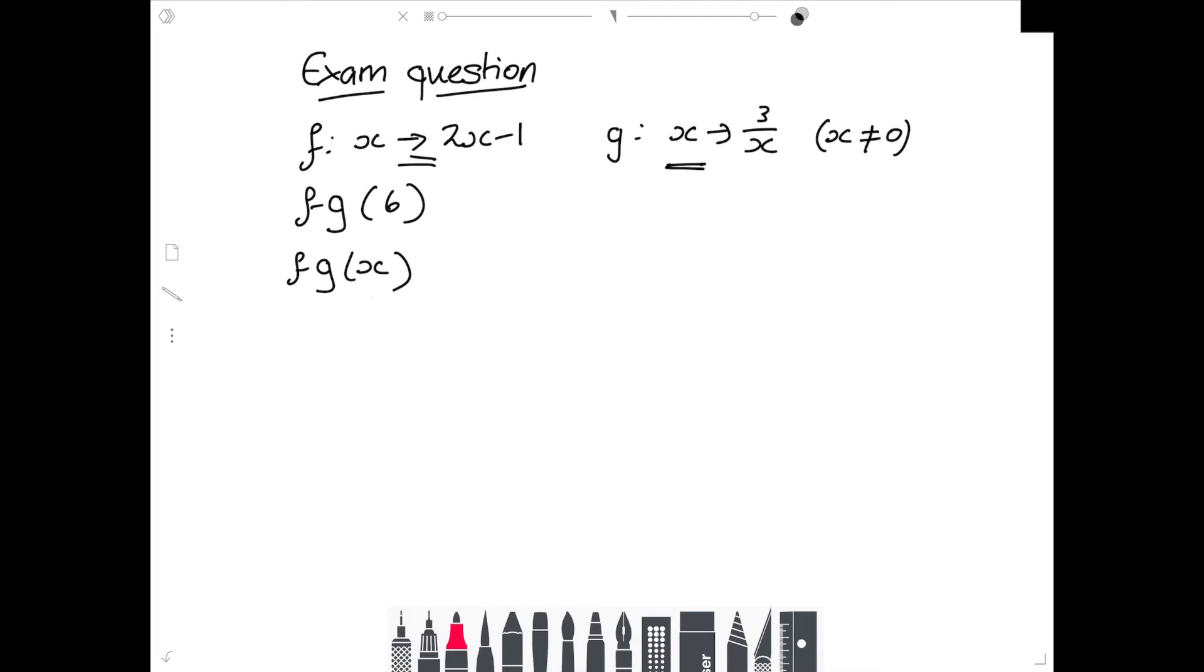Okay, so I'm going to do a sort of exam question with you. So the exam question is defined two functions: the function f, they've defined as start with x, and out the other end comes 2x - 1. The function g, start with x, and out the other end comes the answer 3 divided by x. So the first part wants you to find f∘g of 6. And the second part wants you to find f∘g of x. Now the first part of the question, you can manage by putting the number 6 in and working through both the functions, as long as you remember that you're putting the 6 in, then you are doing the function g, and then you are doing the function f.